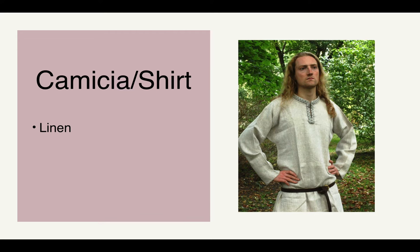These shirts, if you were lower class, would typically be made of coarse heavy linen. If you were upper class, it would be softer, tightly woven, soft linen. The sleeves and the body of the shirt were cut as one piece, and an insert under the arm was sewn in to help achieve more movability. This is called a gusset.